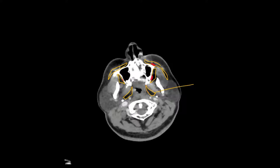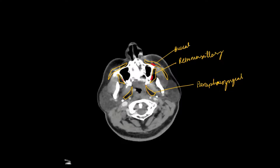So it's important that you know about them. One of them is the parapharyngeal space, another one is the retromaxillary fat space, and last but not least is the buccal space.